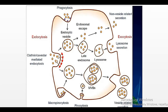Depending on the quality of substances, endocytosis can be classified into phagocytosis and pinocytosis. During phagocytosis, cells engulf solid particles — the name means 'cell eating,' as the cell engulfs something solid from outside. Pinocytosis, or 'cell drinking,' is the transportation of fluids from outside into the cell.